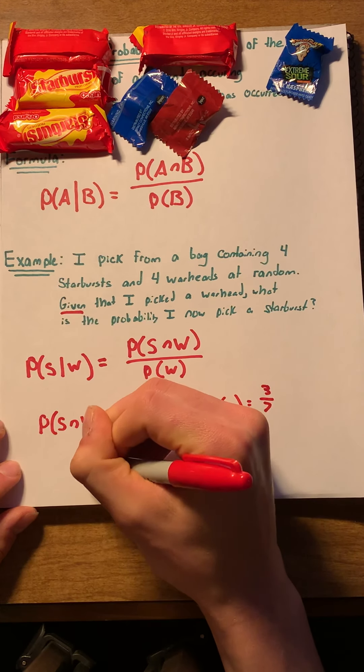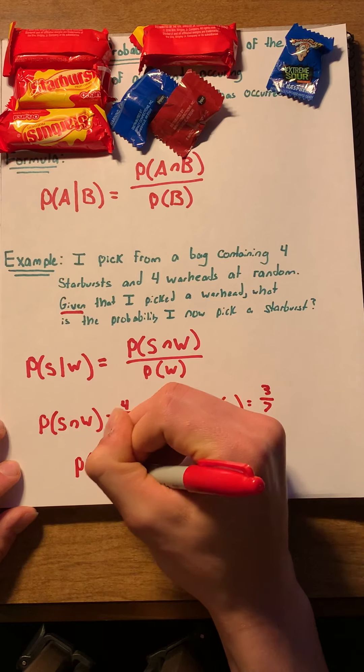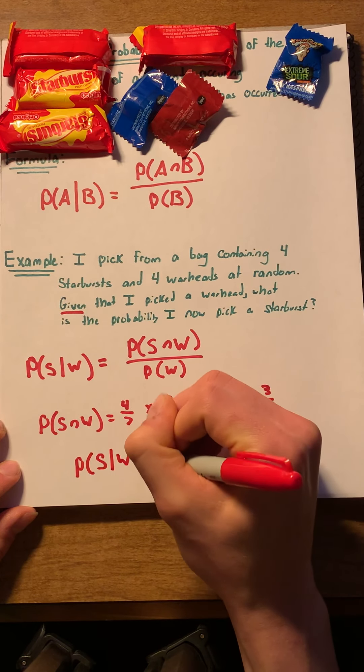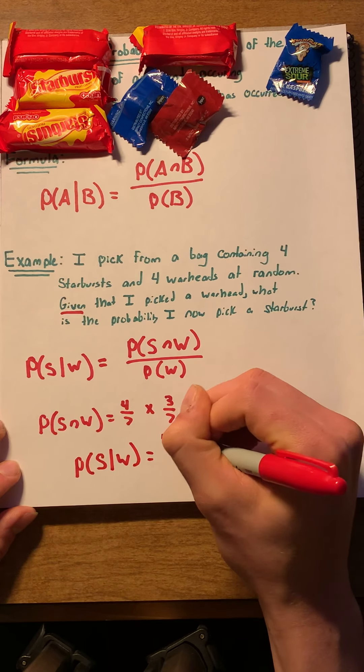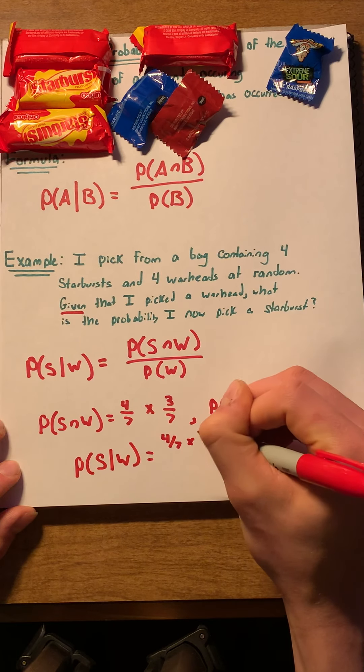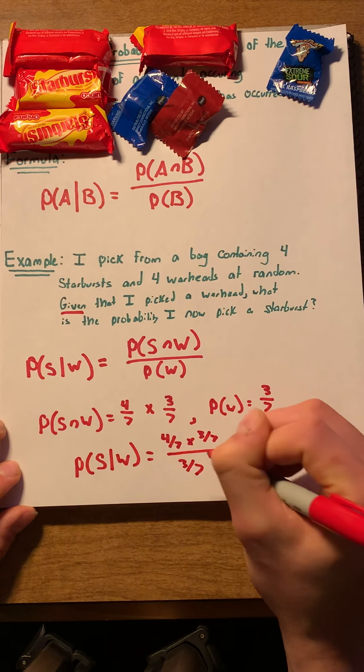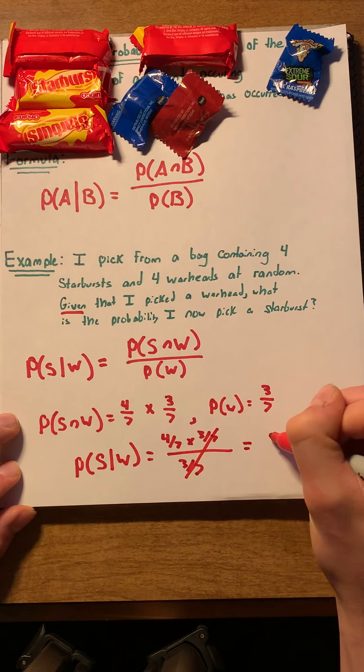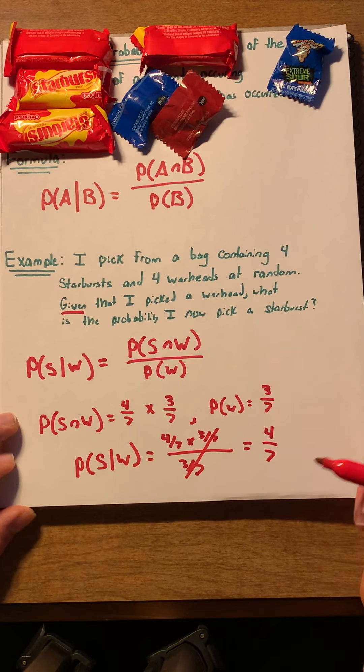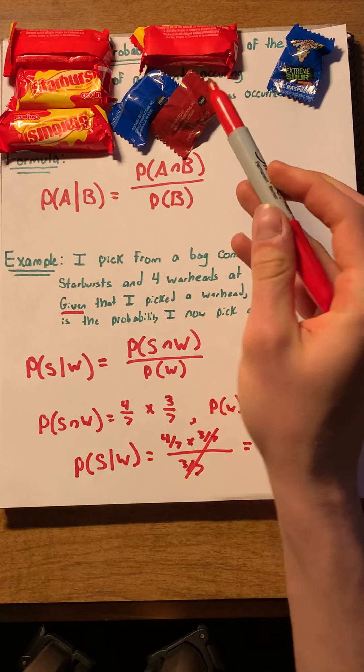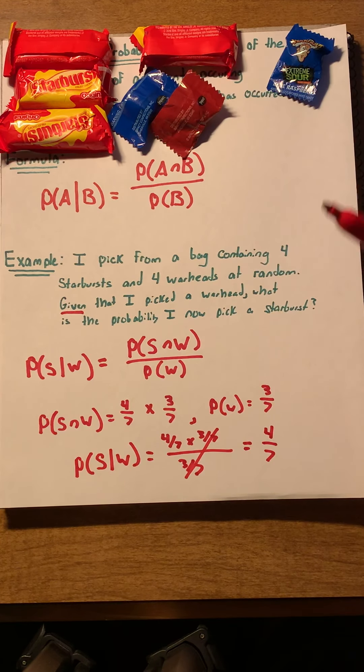We can also see that the probability of picking a warhead is just three-sevenths. This means that the probability of picking a starburst, given I've picked a warhead, is equal to four-sevenths times three-sevenths over three-sevenths. Or, that is to say, it is equal to four-sevenths. And that makes perfect sense. We have seven candies. Four of them are starbursts. Awesome.